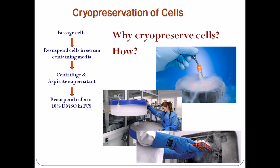DMSO is a cryopreservant, meaning it helps the cell to be preserved. The major problem with cryopreservation and deep freezing is the formation of water crystals inside the cell. If crystals form, the cell will die because the crystals will crack the cell open and kill it. To prevent that we add preservants like DMSO. The precise mechanism by which DMSO protects the cell is unknown, but we know that DMSO can do that.